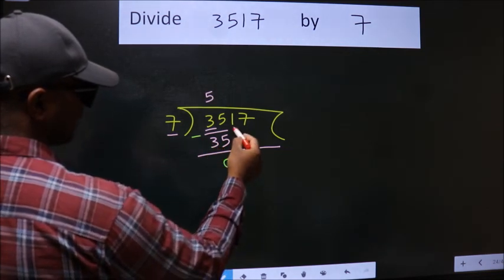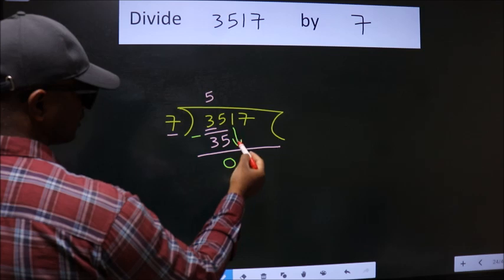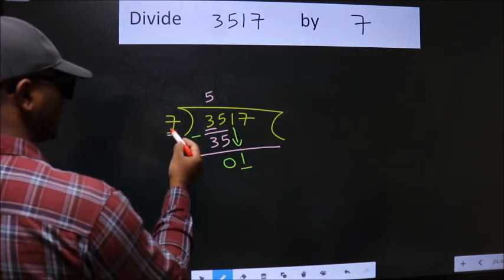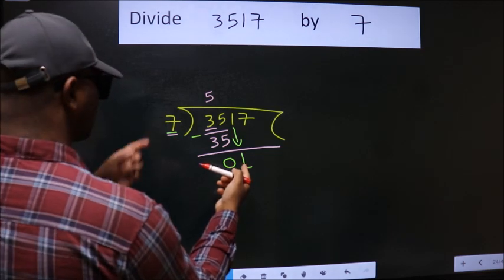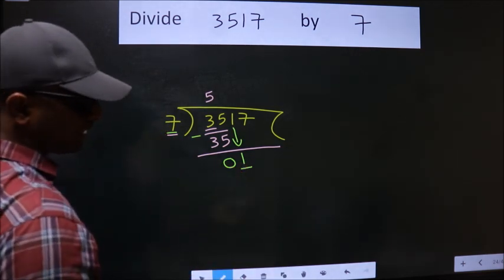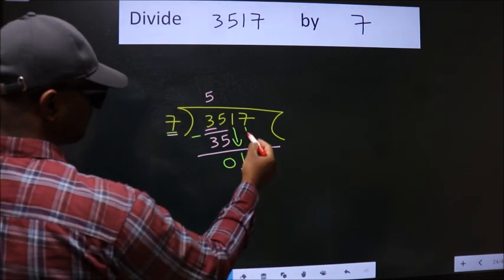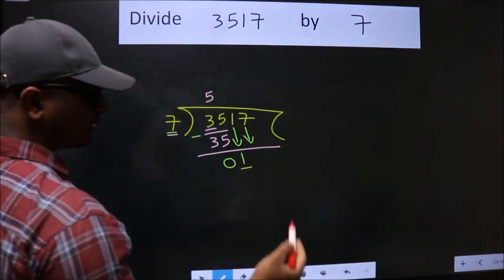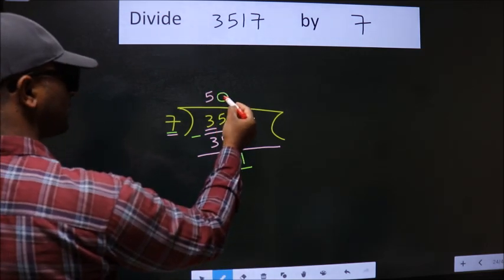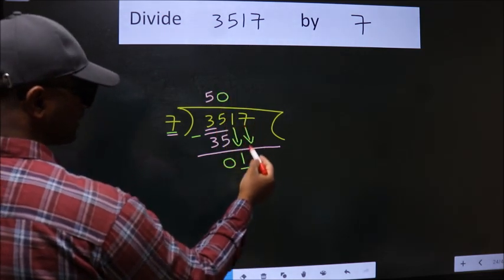After this, bring down the next number. So, 1 down. Here we have 1, here 7. 1 is smaller than 7, so we should bring down the second number. The rule to bring down the second number is put 0 here. Then only we can bring down this number.